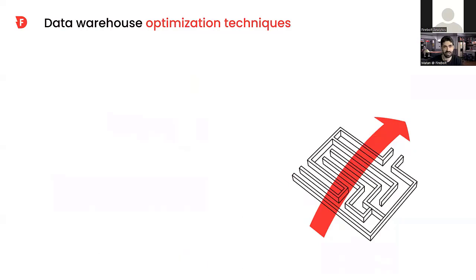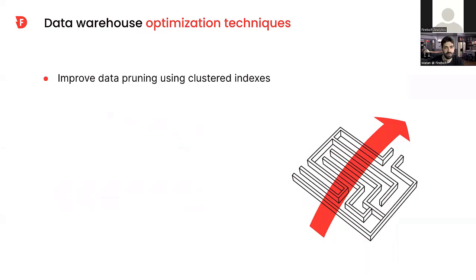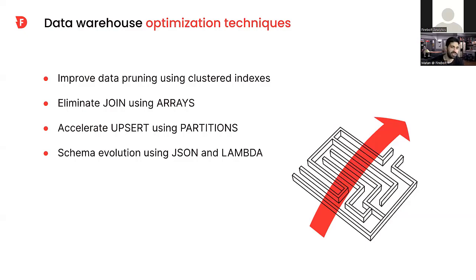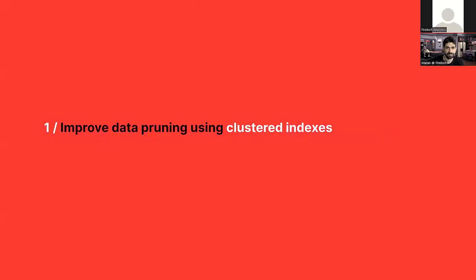So let's talk about the specific four techniques we're going to walk through today. Number one is improved data pruning using clustered indexes. Number two, eliminate joins using arrays. Number three, accelerate upserts using partitions. And number four is schema evolution using JSON and Lambda functions. Let's dive in and talk about the techniques themselves.